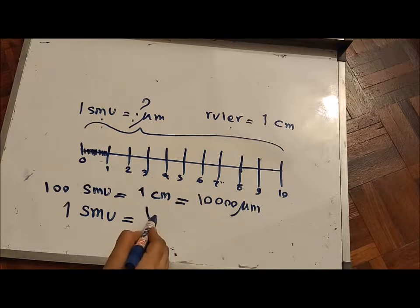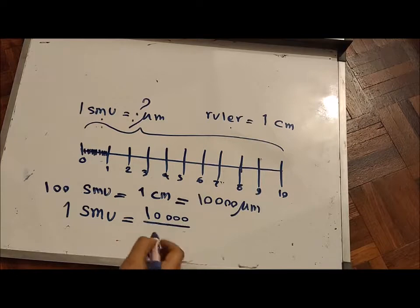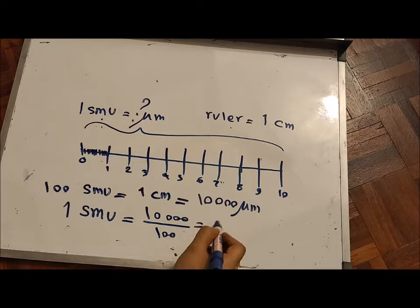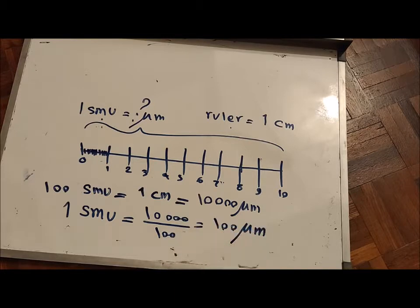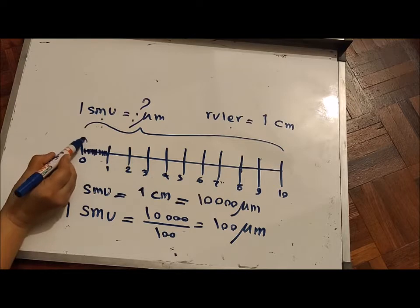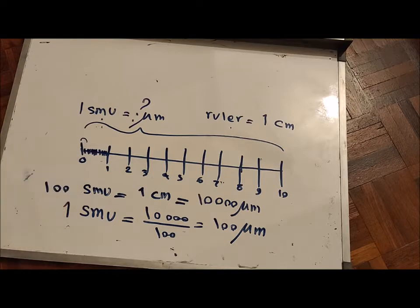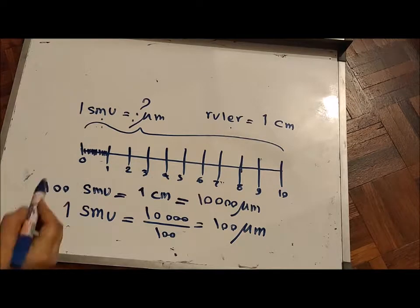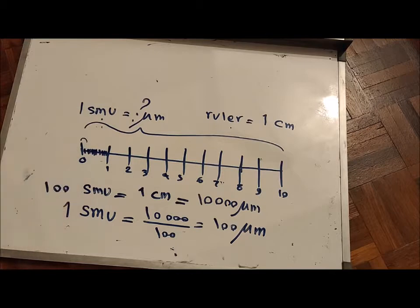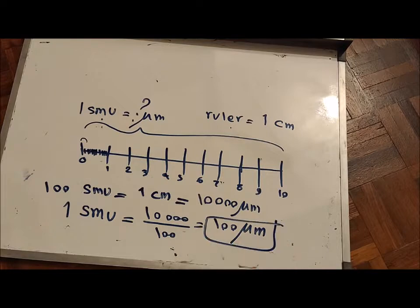One centimeter equals 10,000 micrometers. So one stage micrometer unit equals 10,000 divided by 100, which equals 100 micrometers. We have now found that each one stage micrometer unit equals 100 micrometers.